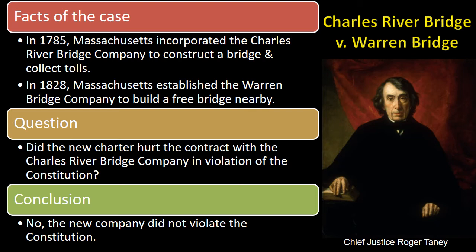In 1785, the Massachusetts legislature incorporated the Charles River Bridge Company to construct a bridge and collect tolls. In 1828, the legislature established the Warren Bridge Company to build a free bridge nearby. Unsurprisingly, the new bridge deprived the old one of traffic and tolls. The Charles River Bridge Company filed suit, claiming the legislature had defaulted on its initial contract. In a 5-2 decision, the Court held that the state had not entered a contract that prohibited the construction of another bridge on the river at a later date, and neither gave exclusive control over the waters of the river nor invaded corporate privilege by interfering with the company's profit-making ability. In balancing the rights of private property against the need for economic development, the Court found that the community interest in creating new channels of travel and trade had priority.